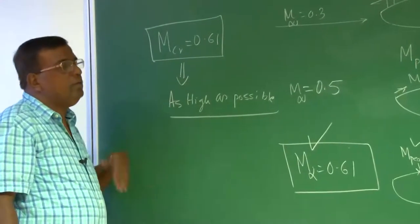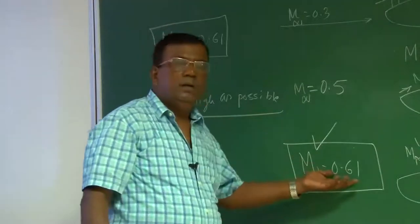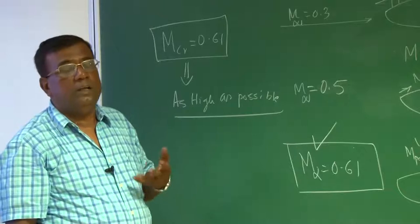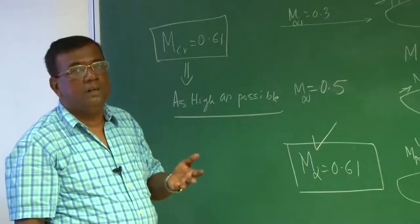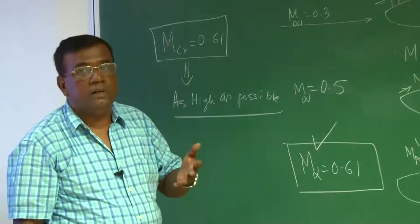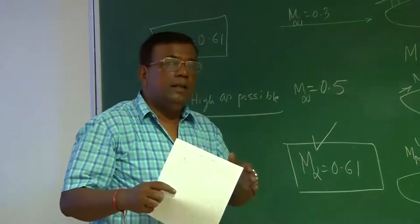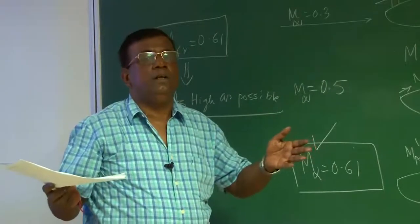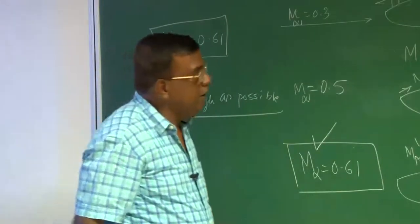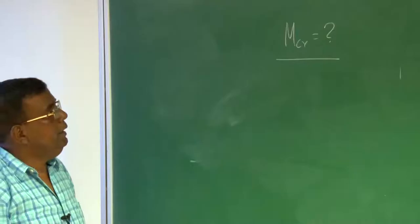So if I want to design a high-speed or high-subsonic airplane, I should ensure that M_critical is as high as possible. That is the importance of M_critical. When you select an aerofoil — suppose you want to design a wing for a given airplane where you want the speed to be around 0.6 or 0.7 — this requirement becomes predominant in selecting the aerofoil. I should look for an aerofoil, and subsequently a wing, that has a larger M_critical. Not only aerofoil shape, but something you can do with the wing to increase M_critical.